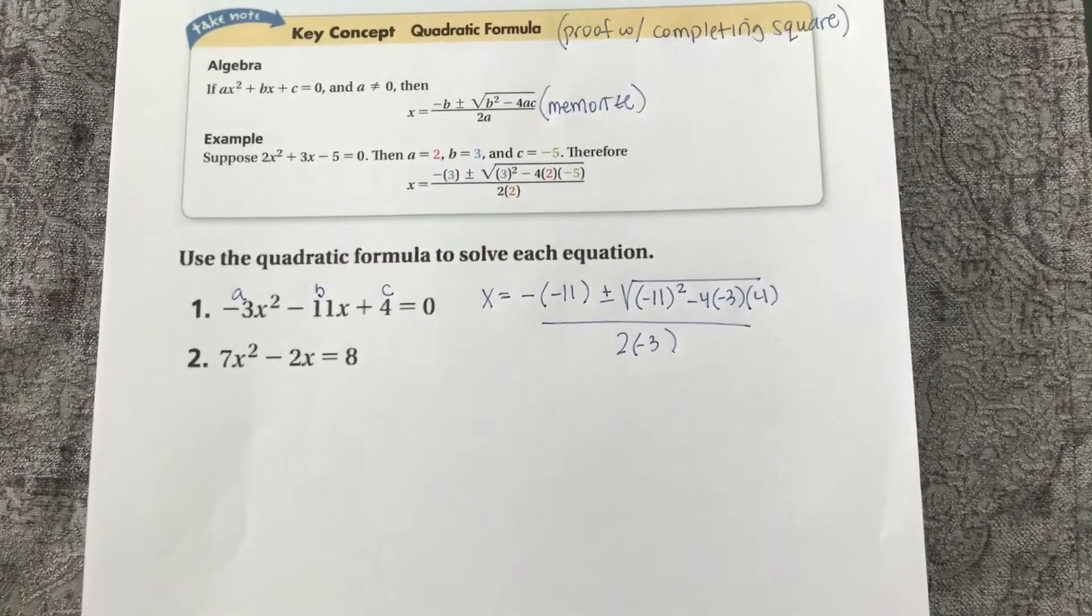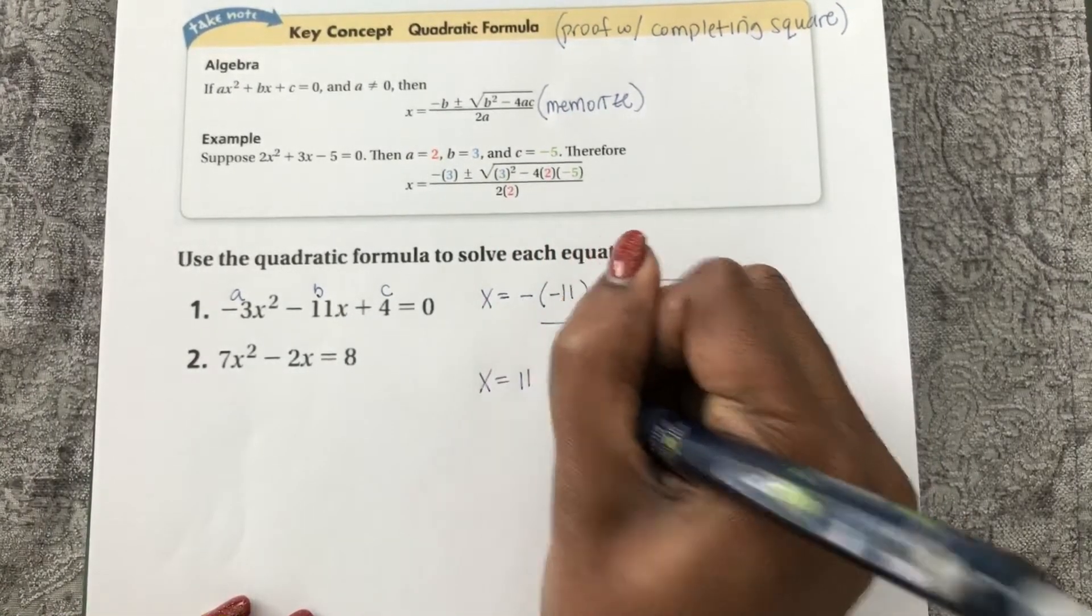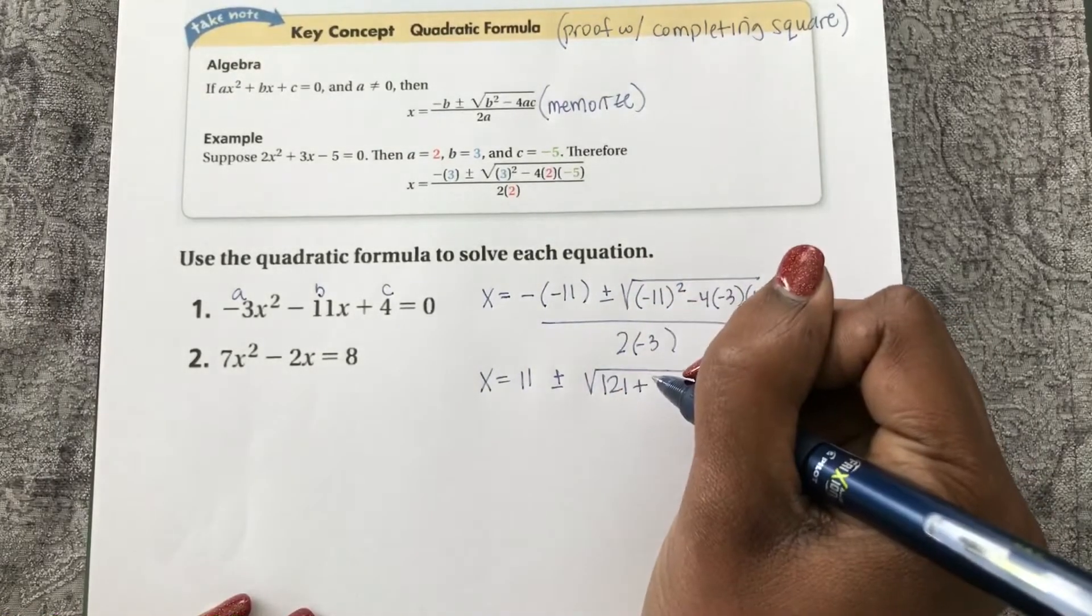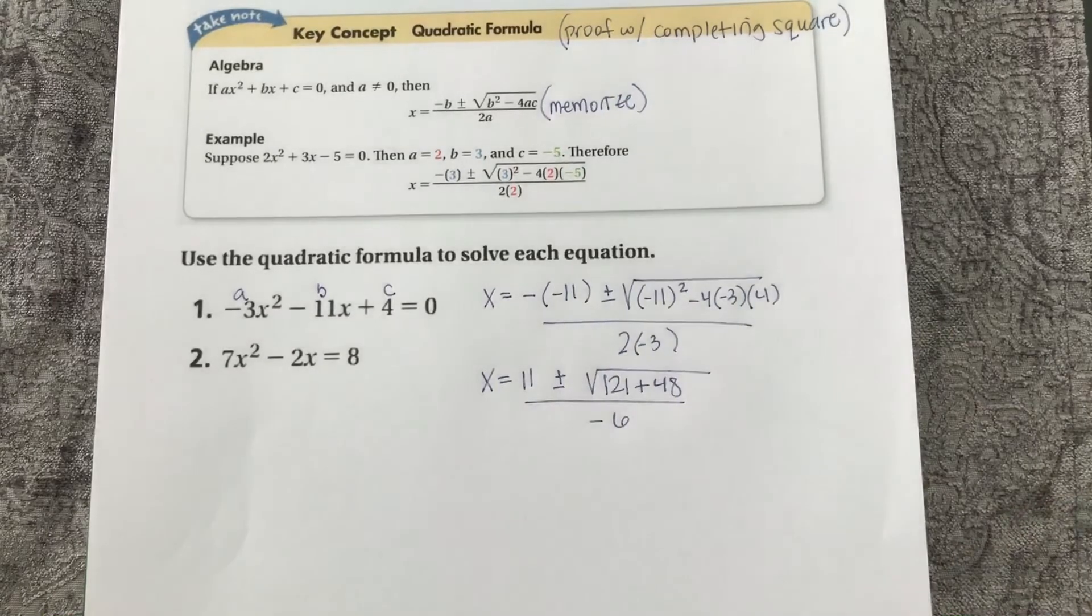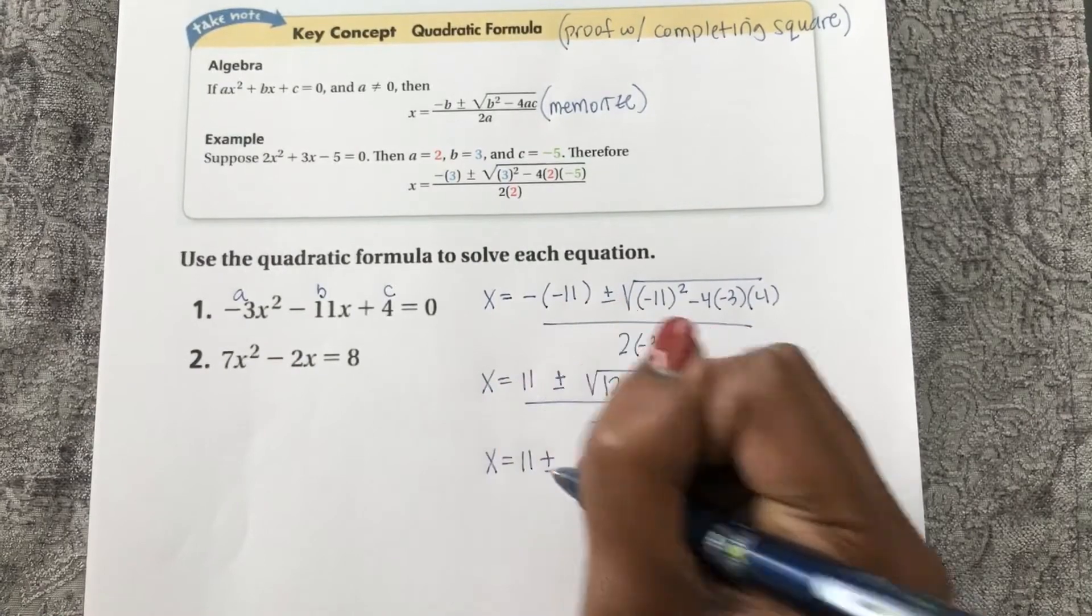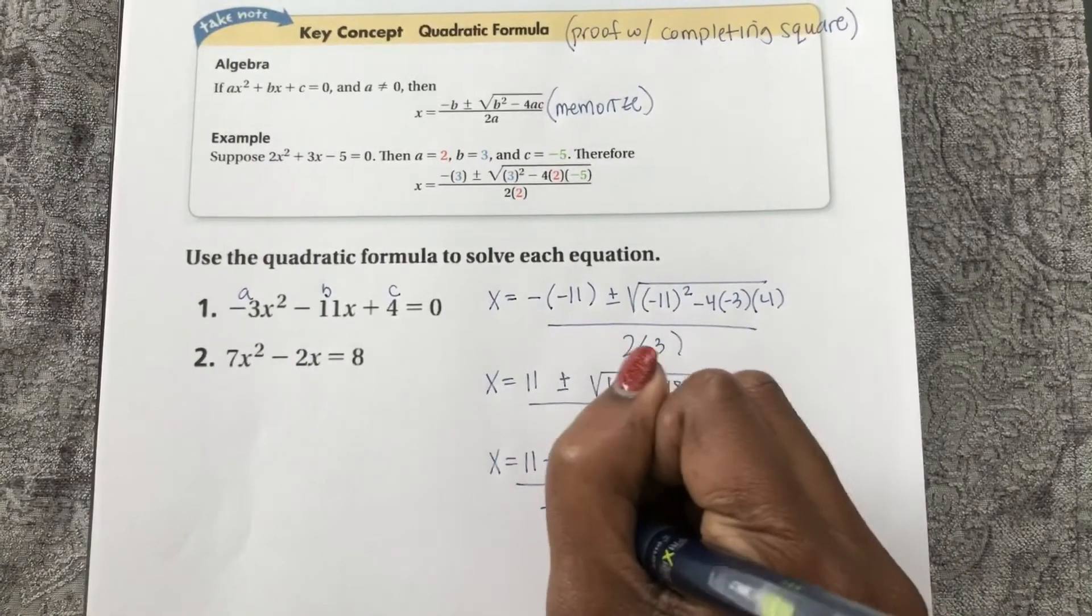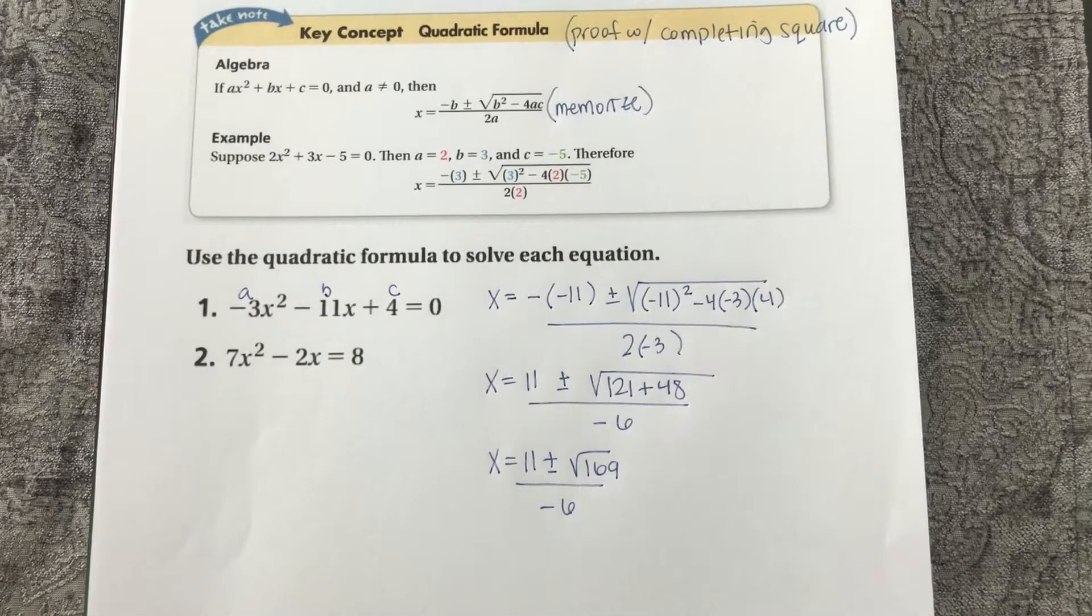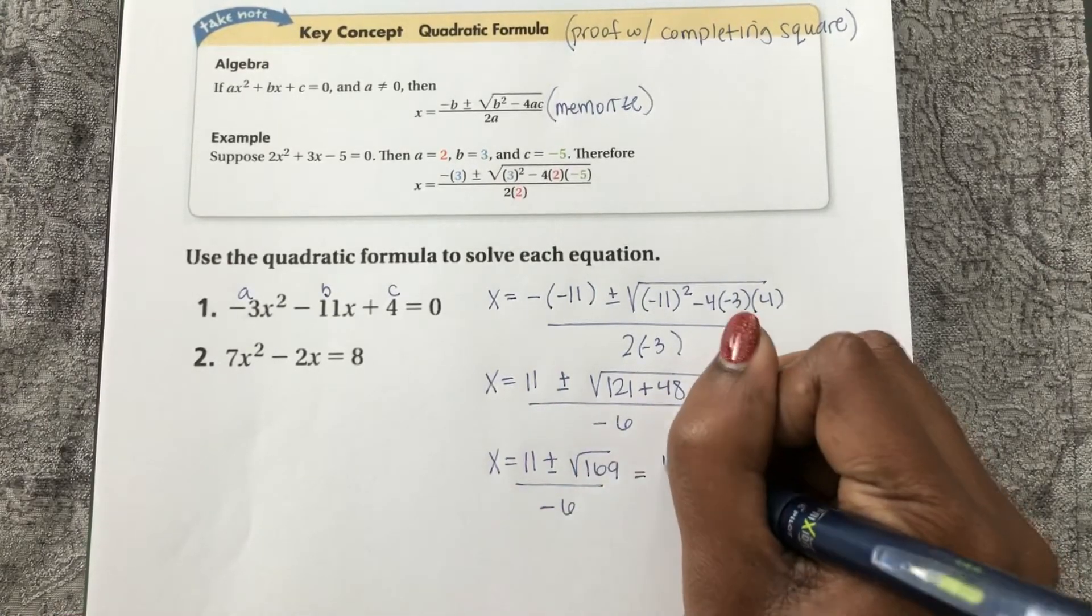From this step on, we're just simplifying. Negative negative 11 is 11 plus or minus the square root of 121 plus 48 all over negative 6. So now 121 plus 48 is 169. And now we know the square root of 169. It is 13.